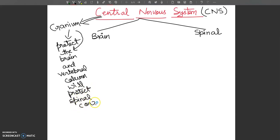It is also protected by three layers of connective tissue membranes called meninges. When there is inflammation in the meninges, we call the condition meningitis.